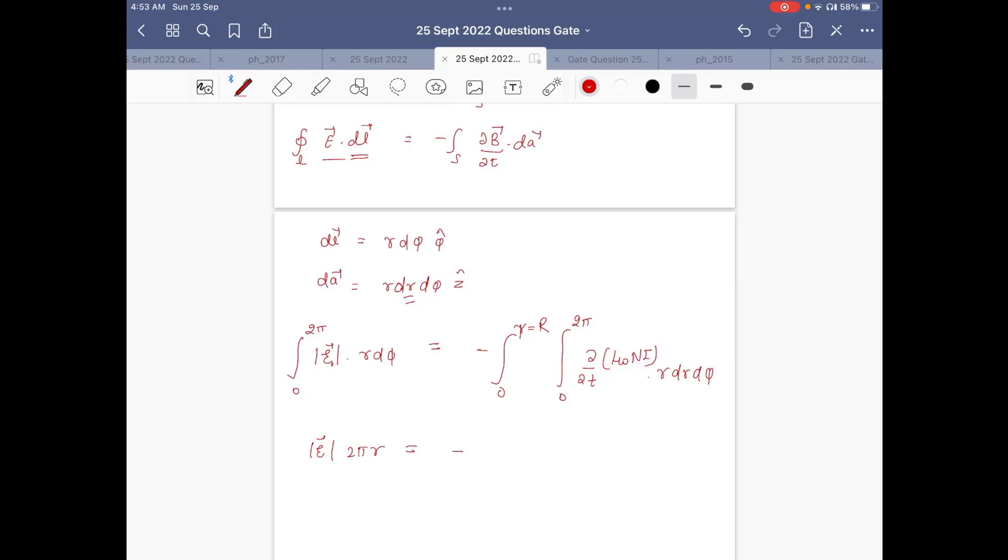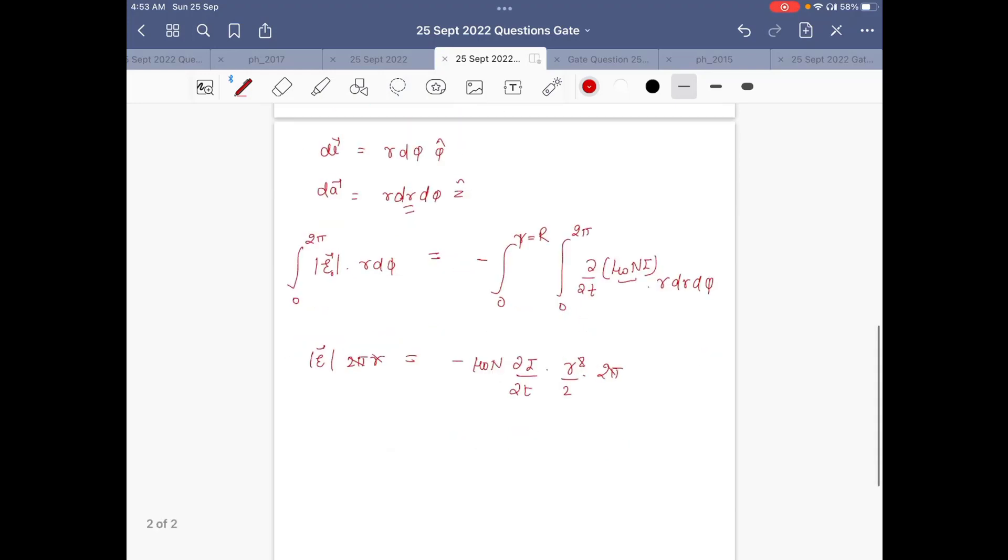So when we integrate it, it will become |E| times φ times r on the left. On the right hand side, μ₀N is constant that will come outside, ∂I/∂t, and r²/2 from the r integration times 2π from the φ integration. So we will cancel the φ component here and simplify.